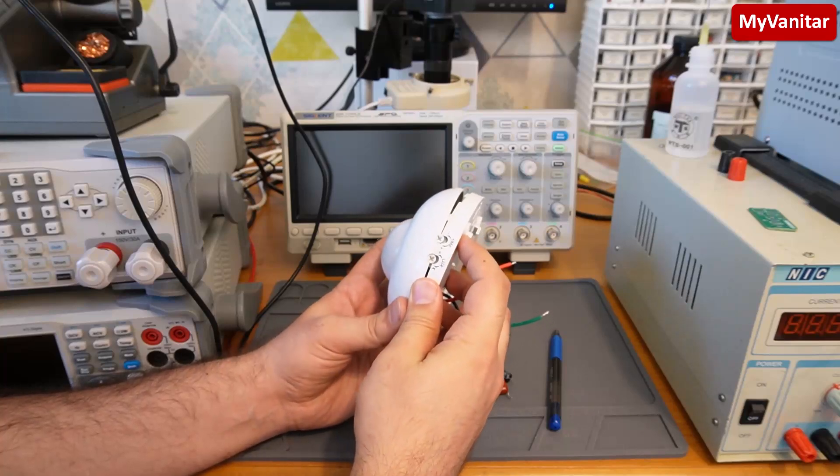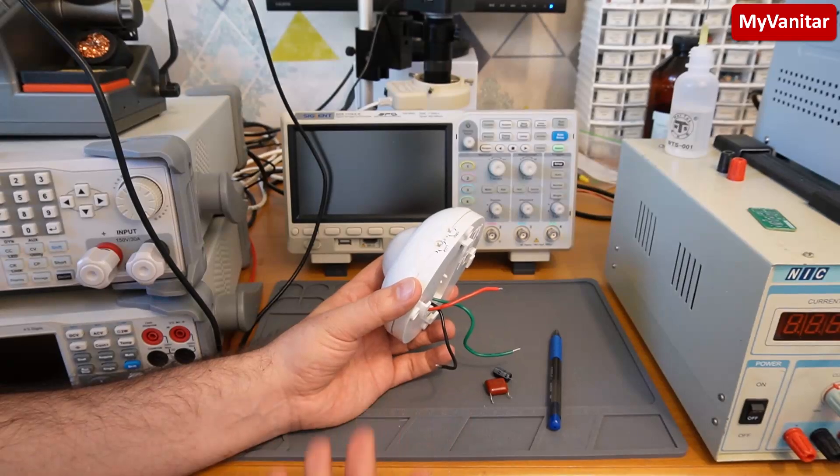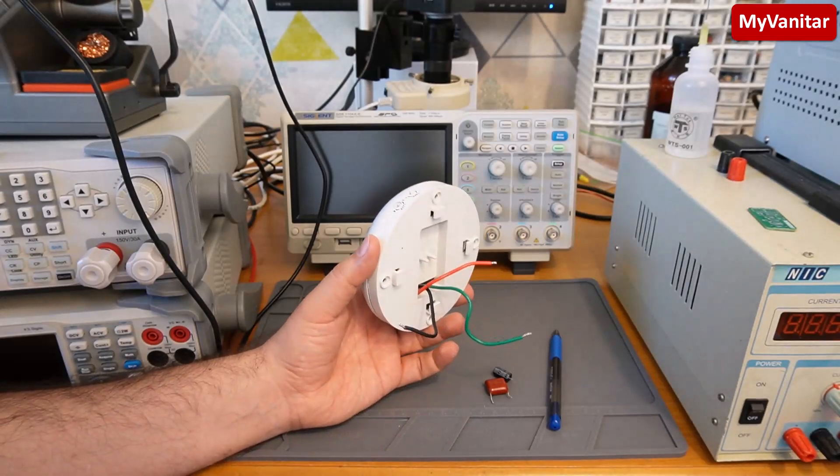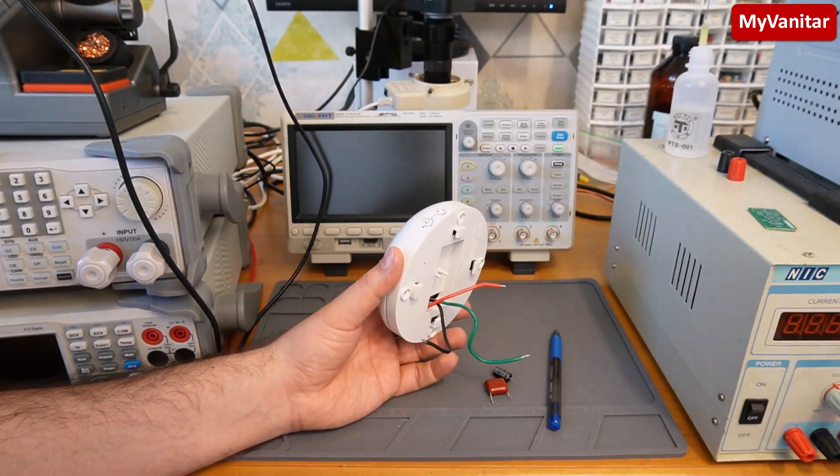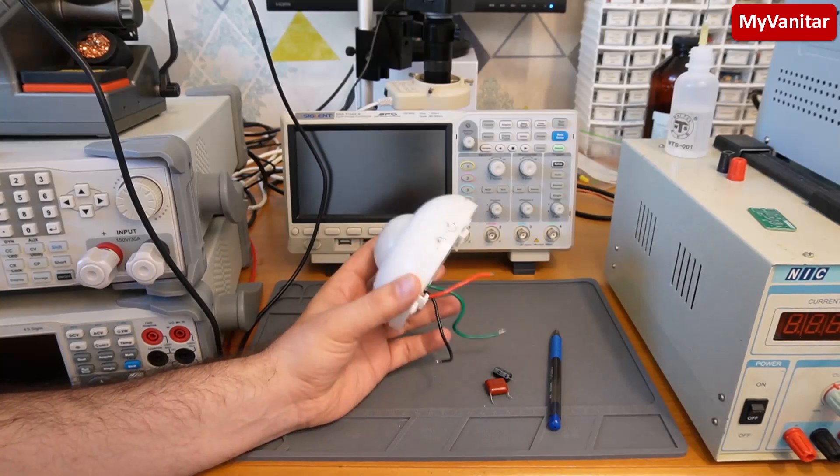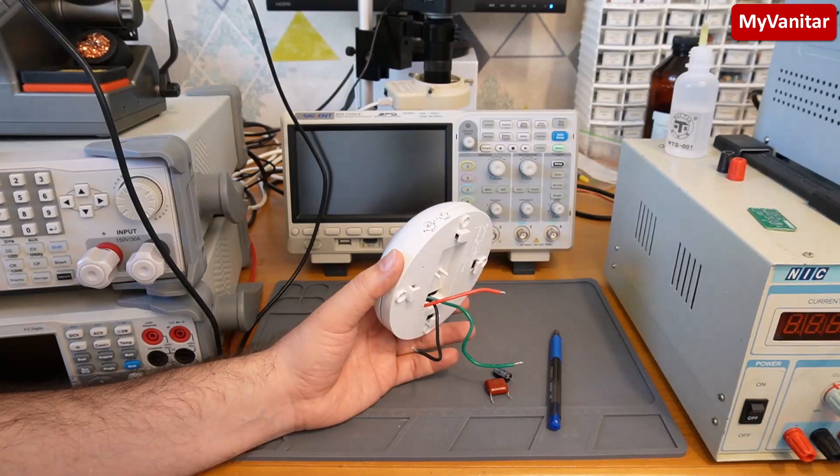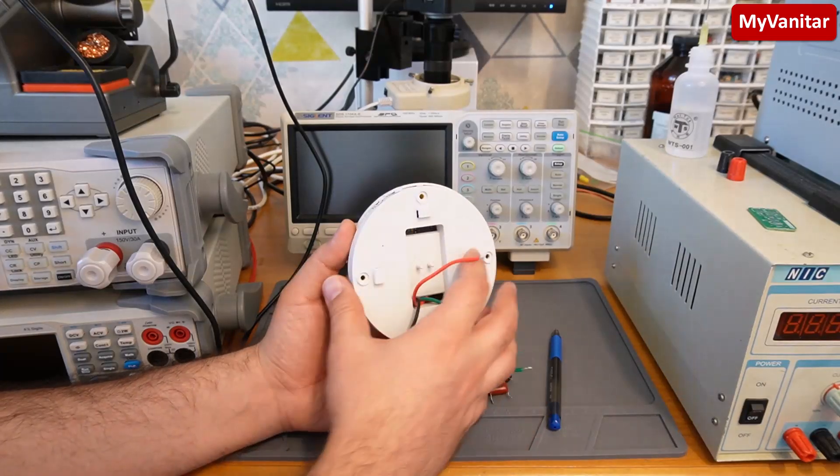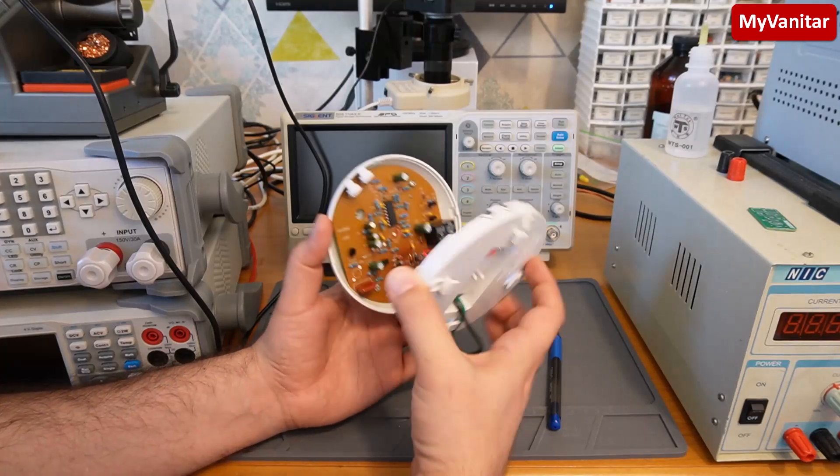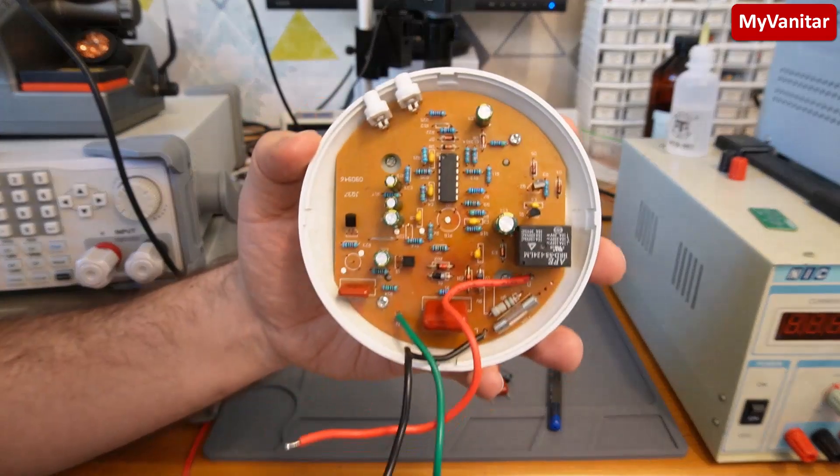So I decided to repair this thing although it is pretty cheap, because one of the methods that we learn electronics in practice is by repairing stuff. Also to see how companies build cheap products for the mass population market. This is the back side of the enclosure. Take it away and here is the inside.